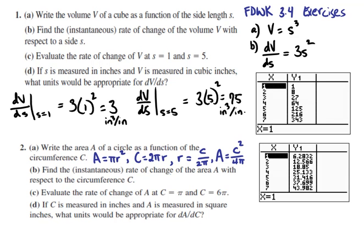For B, we want to find the instantaneous rate of change of the area A with respect to circumference. So we would write dA/dC. Since 1 over 4π is a constant, we'll bring that out using the constant multiple rule. Then we'll apply the power rule to C² and get 2C. We get that the rate of change of area with respect to circumference is C over 2π, which happens to be the radius.